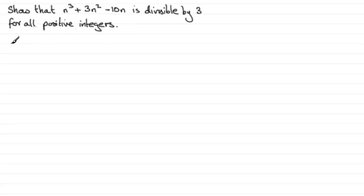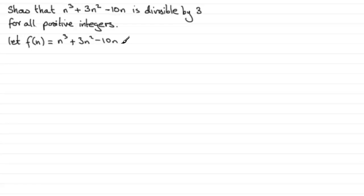We start off by defining f of n as being the expression we're given — in this case, n cubed plus 3n squared minus 10n. If you're not sure about mathematical induction, briefly: we need to show that our statement works when n equals 1, then assume it's true for n equals some positive integer k, and prove on that basis that it is true for n equals k plus 1.